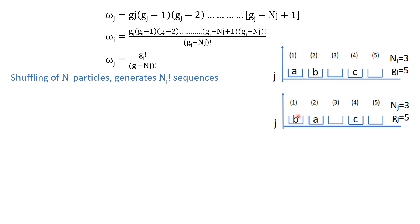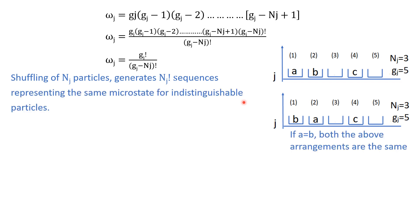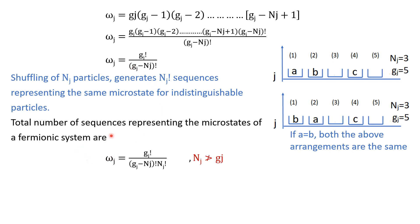Now, as we shuffle the nj particles, that generates nj factorial sequences. For example, if I shuffle two particles A and B — bringing A here and B here — I have generated another microstate. However, if the particles are indistinguishable, that is A equals B, then these two states are exactly the same. So if I have nj particles, by shuffling them I can create nj factorial sequences, but all those sequences correspond to the same microstate. This means there are repetitions due to the indistinguishability of the particles, so I have to remove those repetitions by dividing by nj factorial.